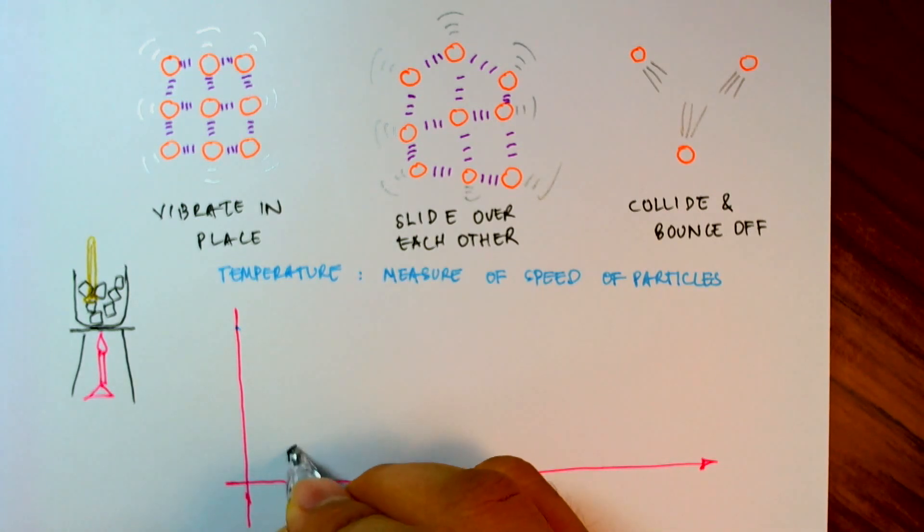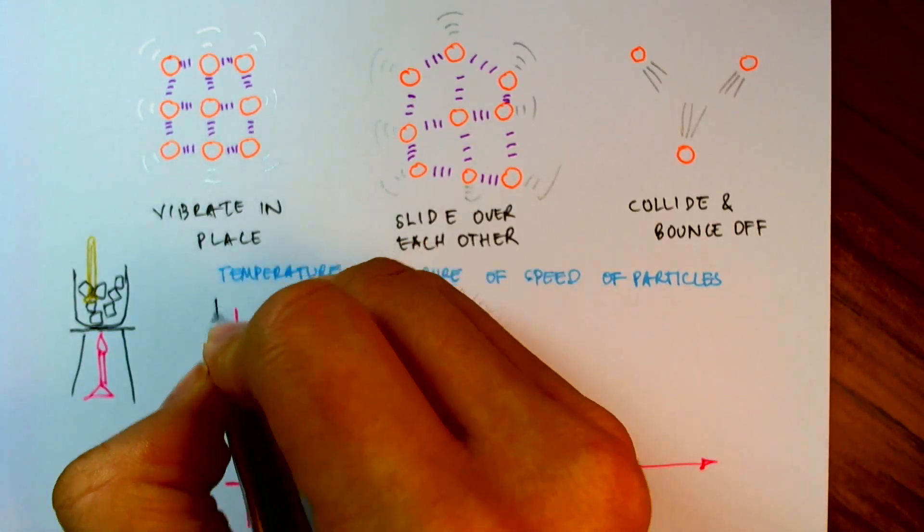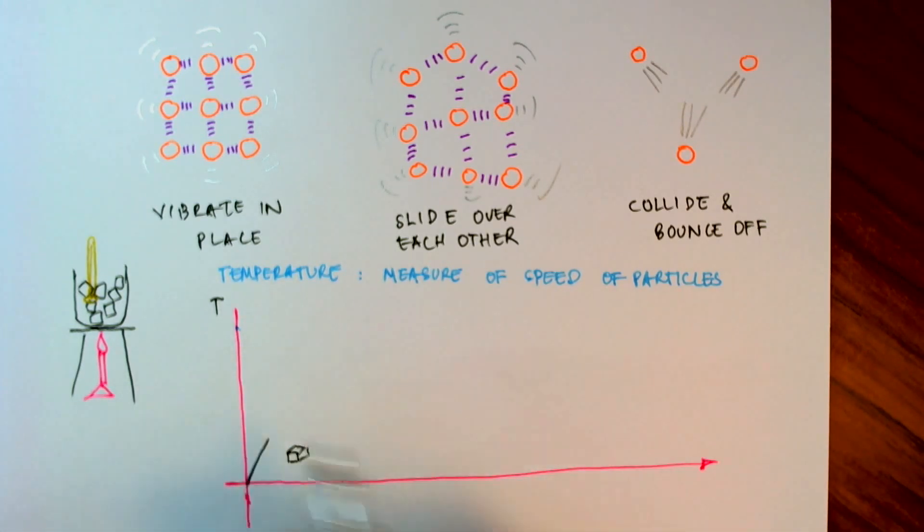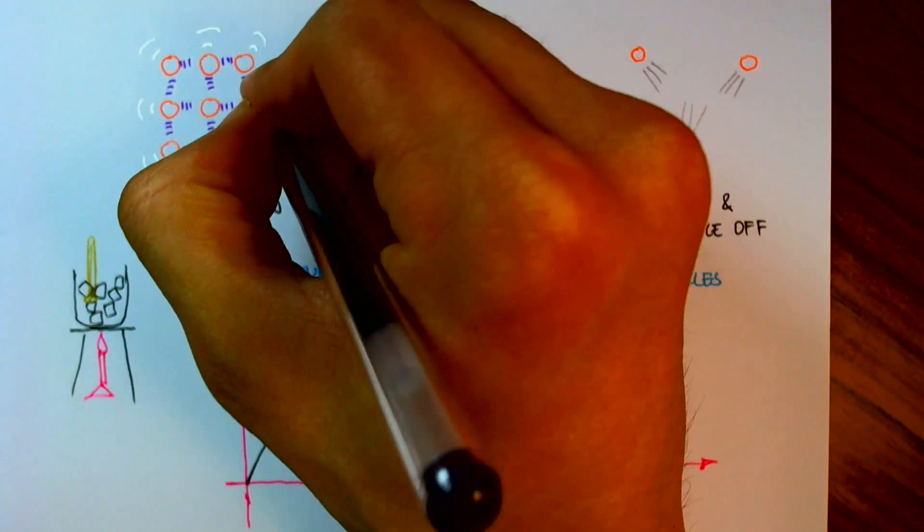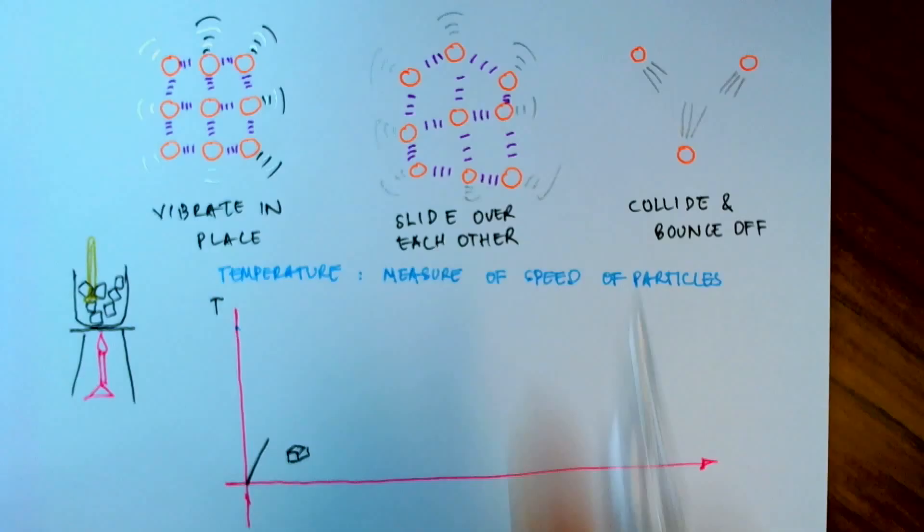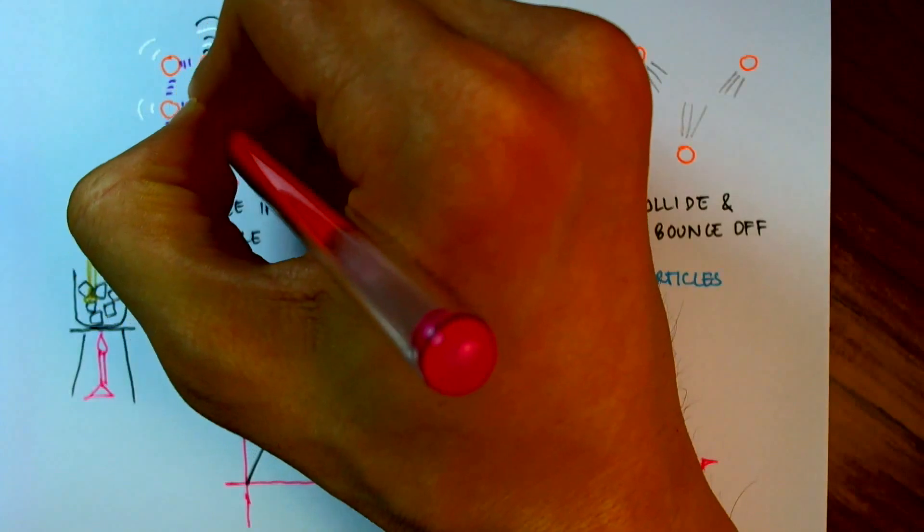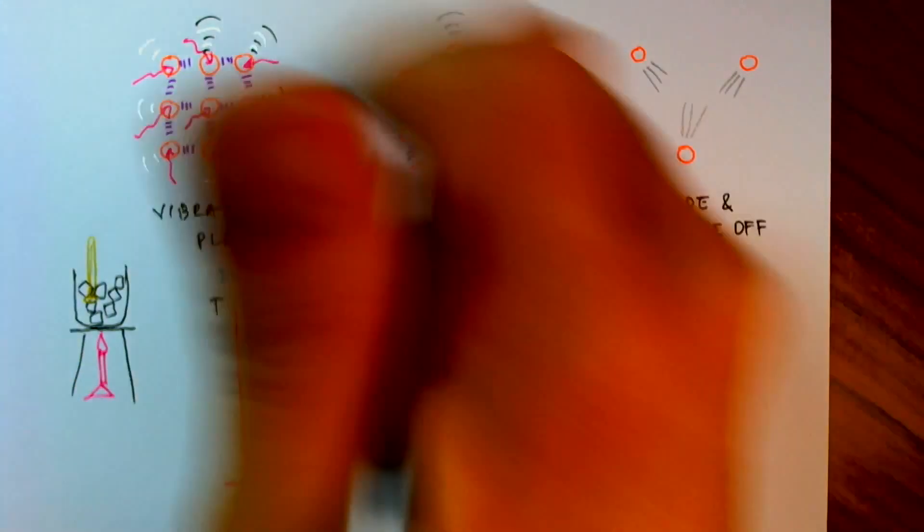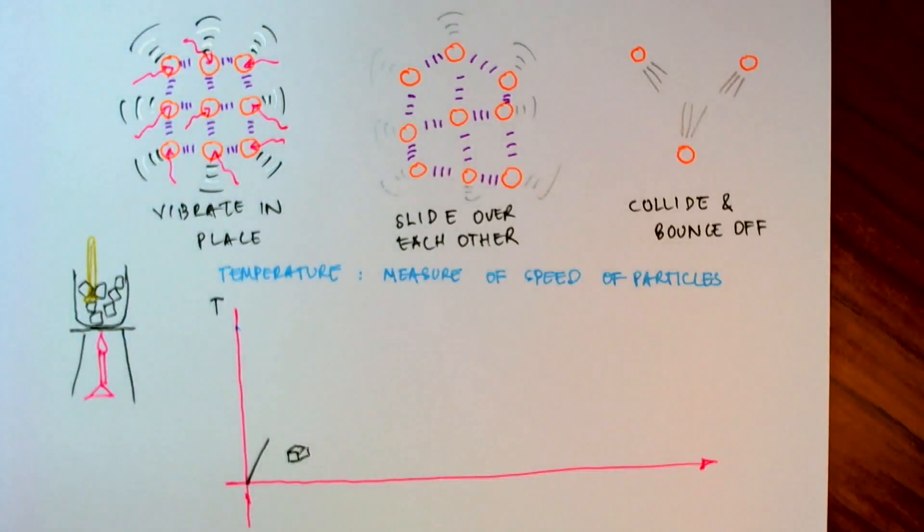So we're starting out with some blocks of ice. And as I heat it, the temperature will start to increase. Now, why would the temperature increase? Well, if we take this notion of temperature to be the measure of the speeds of the particles, as I heat it, the heat energy is going to cause these particles to vibrate further. So the energy is being transferred into the particles, causing them to increase in the speed of their vibration. Hence, the temperature increases.